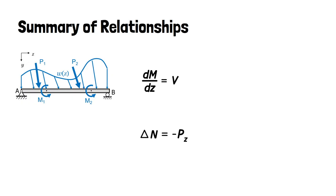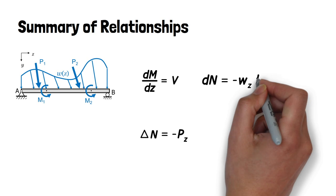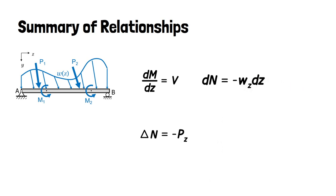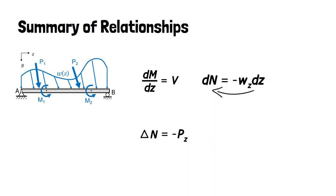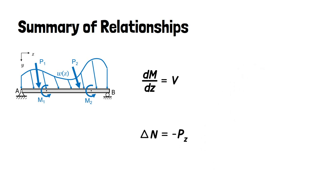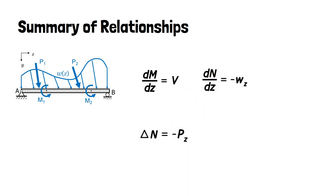The result for the lateral distributed force gives us a relationship between the internal normal force and the lateral distributed load that is dependent on the width of the element. We can express this as a rate of change of the normal force, dn divided by dz, being equal to the negative of the lateral distributed load wz, using the directions established as positive for our applied loading.